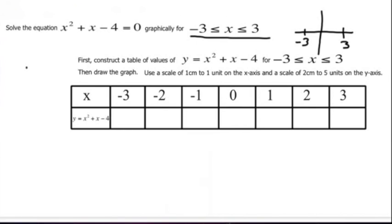First I'll start with negative 3. If I plug negative 3 into my equation x squared plus x minus 4, I get negative 3 squared which is 9, plus x which is minus 3. So I have 9 minus 3 which is 6, and then minus 4 gets me 2.